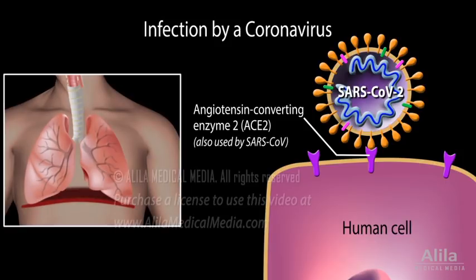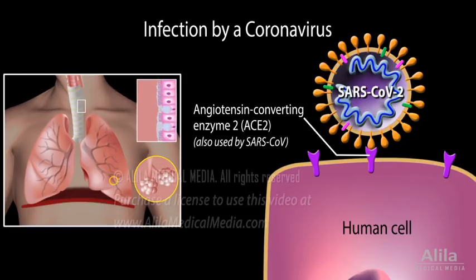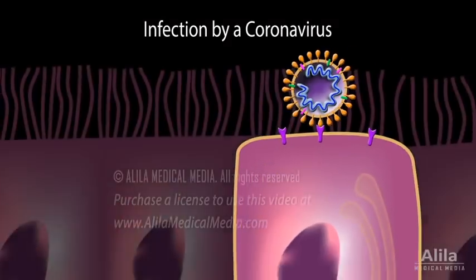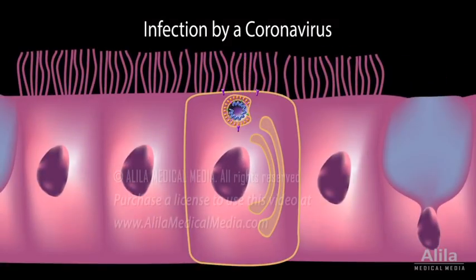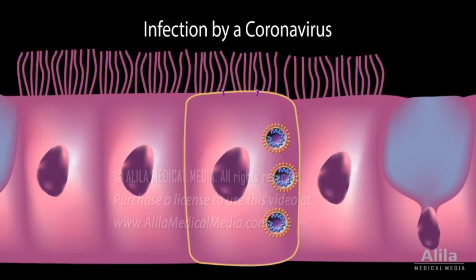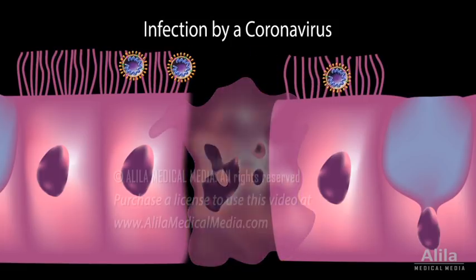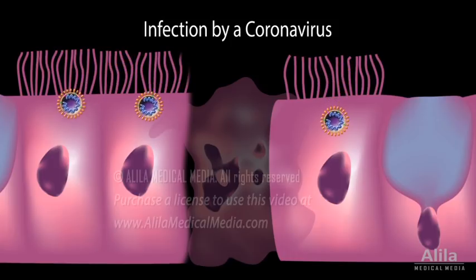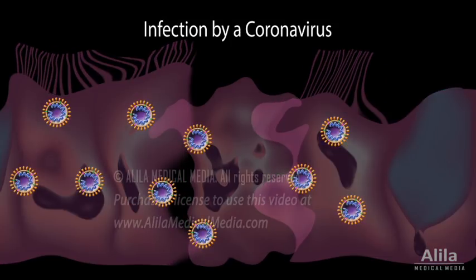Infection usually starts with the cells of the respiratory mucosa, then spreads to epithelial cells of alveoli in the lungs. Receptor binding is followed by fusion of the viral membrane with the host membrane, and the release of the nucleocapsid into the cell. The virus then uses the host machinery to replicate, producing viral RNAs and proteins. These are then assembled into new viral particles called virions. The new virions are released, and the host cell dies. Uncontrolled growth of the virus destroys respiratory tissues, producing symptoms.